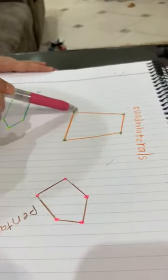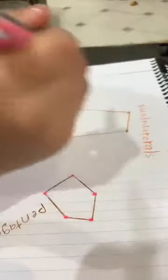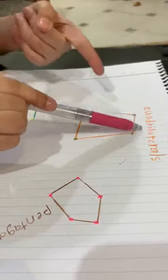And I have another shape: 1, 2, 3, 4. Four sides and 1, 2, 3, 4 vertices. The name is quadrilateral.